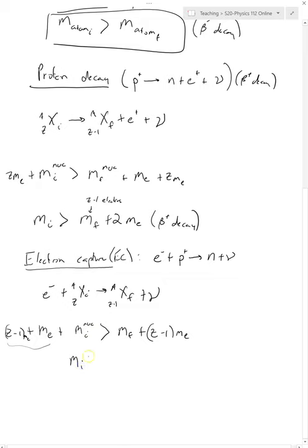All right, that's just the initial mass of the atom, and then this final nucleus also has Z minus one, and we have Z minus one electrons added on this side, and so this just gives us the mass final. So for electron capture, the condition is that the mass initial must be greater than the mass final.